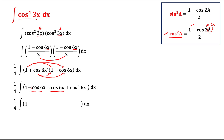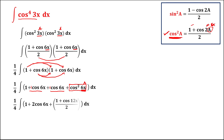Combining like terms, 1 plus the two cosine 6x terms gives 1 plus 2 cosine 6x plus cosine squared 6x. For the cosine squared 6x term, we apply the identity again: with a equal to 6x, cosine squared 6x equals 1 plus cosine of 2 times 6x, which is 1 plus cosine 12x, over 2.